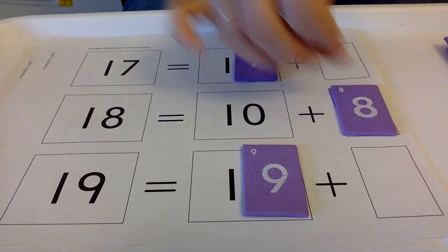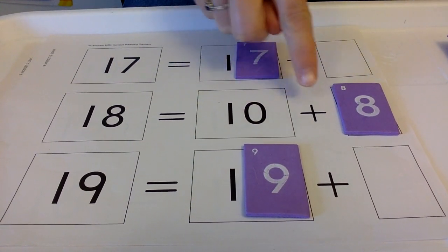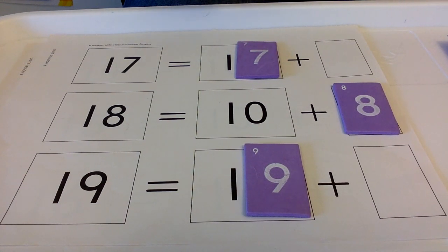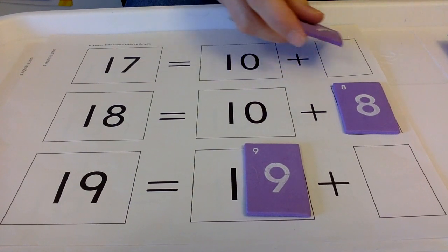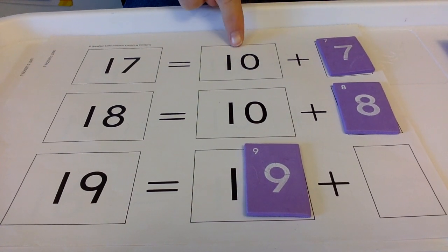Okay, let's do 17. Move it. 17 equals 10 plus 7.